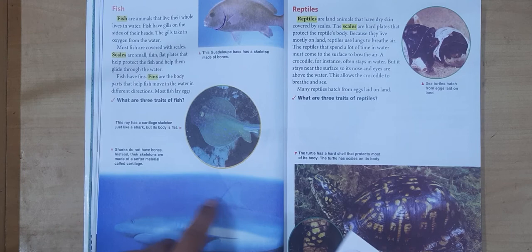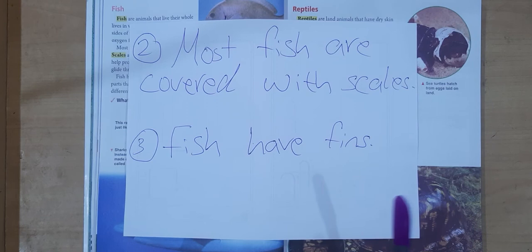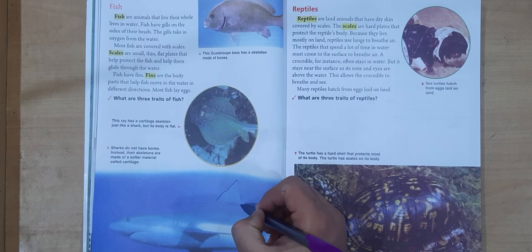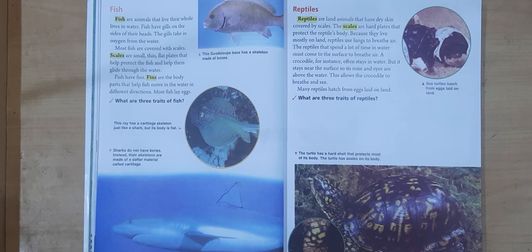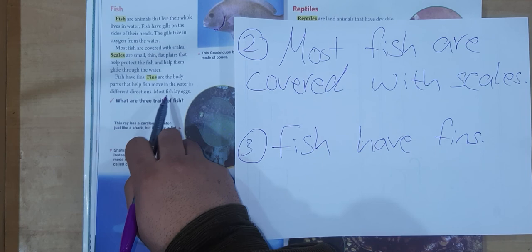Three: fish have fins. These things are called fins — and this is another fin, and this is another fin. One last point that is quite important is that most fish lay eggs.